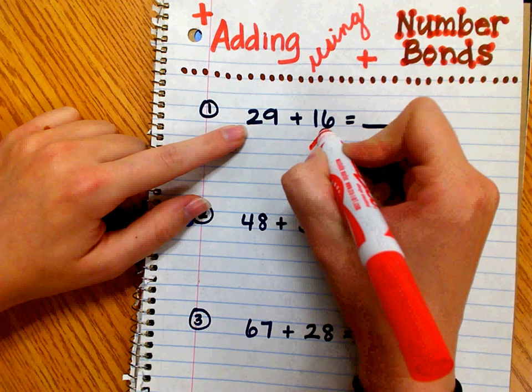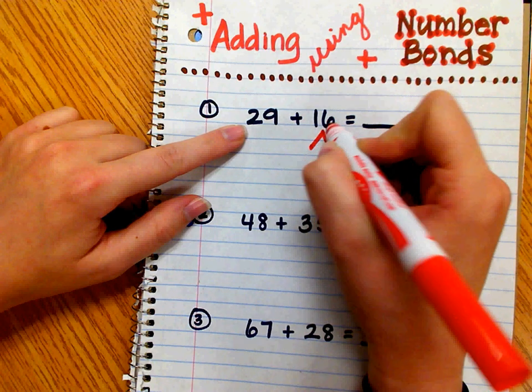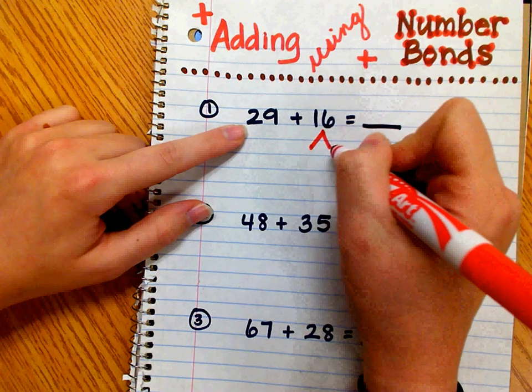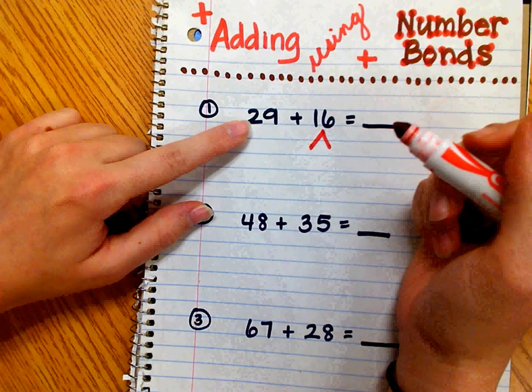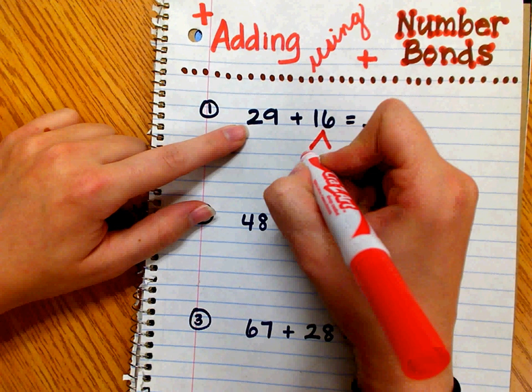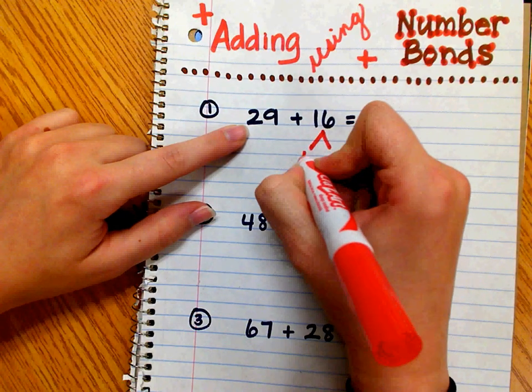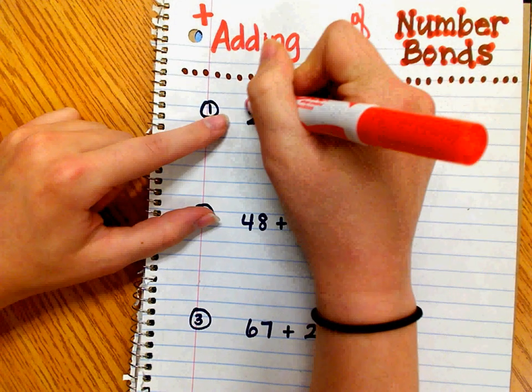So I'm going to make a number bond with the number 16. I'm going to decompose it into two smaller parts so that I can use one of the parts to make 29 a multiple of 10. So 29 only needs one more to make 30.